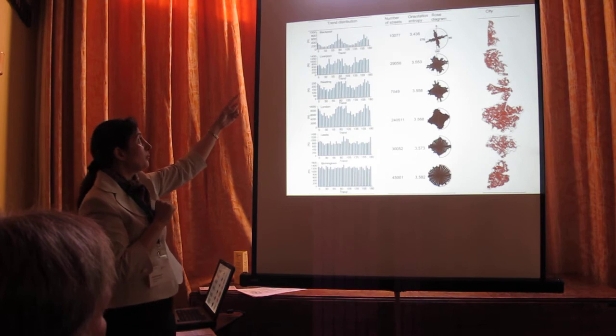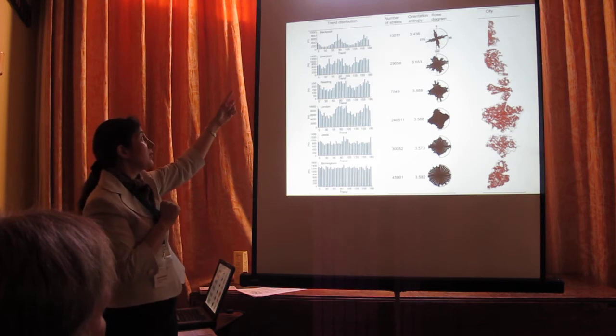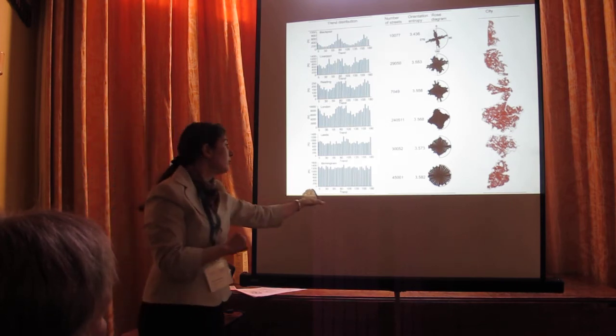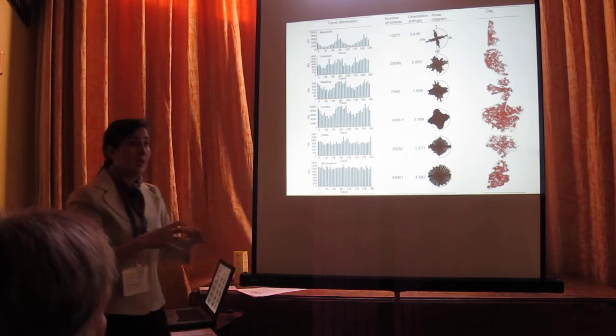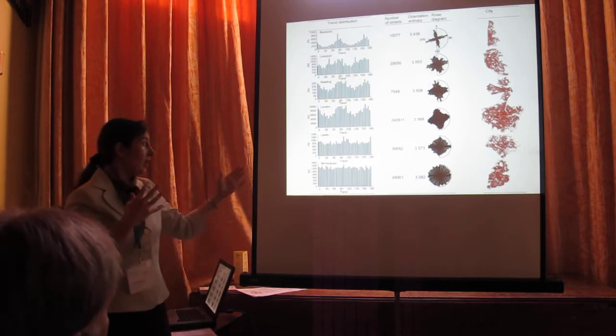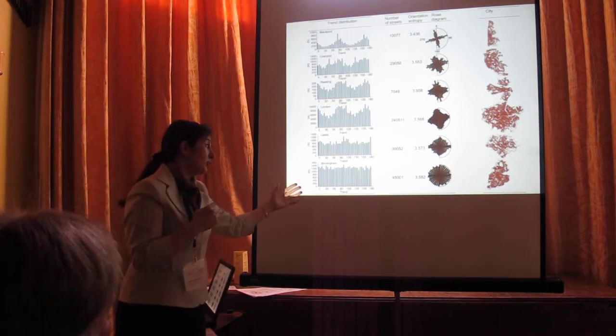We can see this even better from the histogram: the more peaked the distribution, the lower the entropy, and the more uniformly distributed the street networks, the higher the entropy.